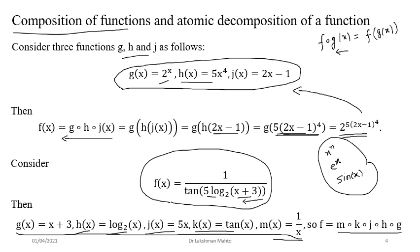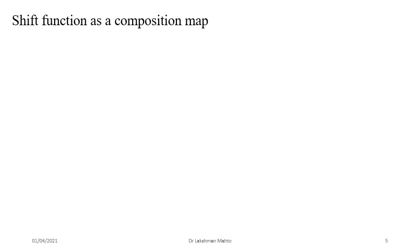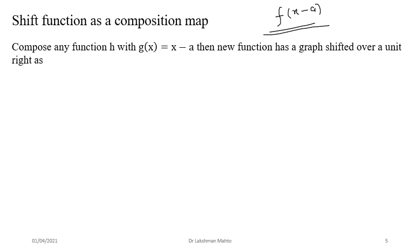Keep practicing: given any complex function, try to find its atomic composition. One more application of composition is the shift function. If g(x) = x − a, then composing any function h with g gives h(x−a), which represents a shift of the origin of the argument to point a. The new function's graph is shifted a units rightward.